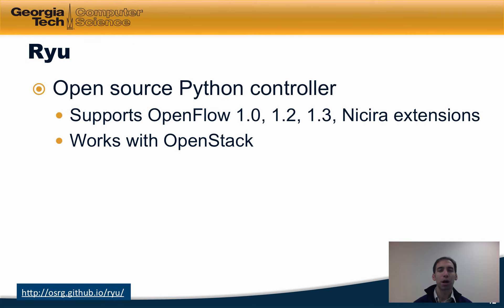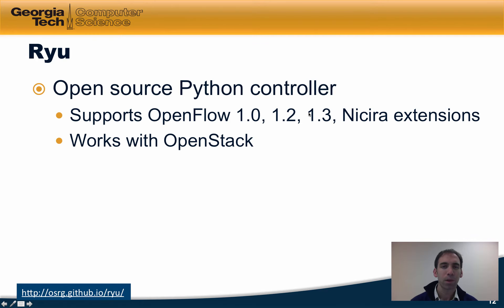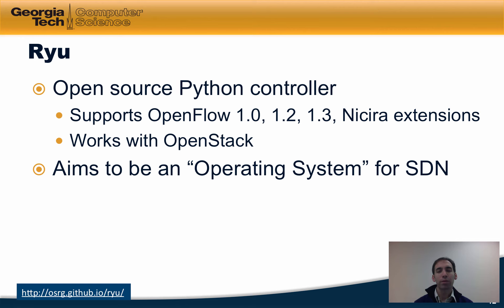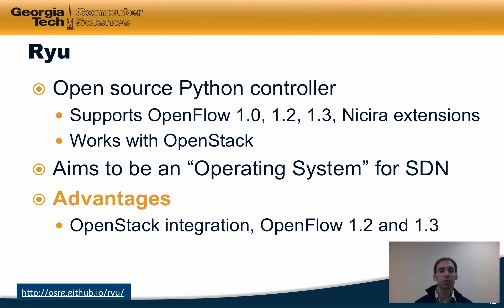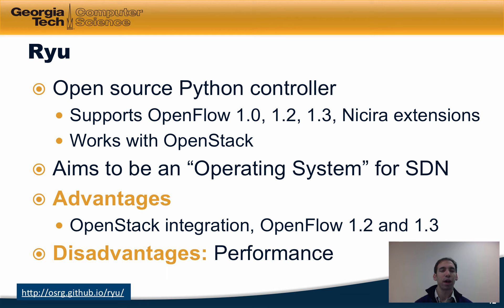Ryu is another open source Python controller. It supports OpenFlow 1.0, 1.2, 1.3, and various Nicira extensions, and it also works with OpenStack — a cloud operating system that controls storage, compute, and networking resources in a data center and allows you to write cloud applications on top of it. Ryu aims to be an operating system for SDN and has advantages including integration with OpenStack and support for OpenFlow 1.2 and 1.3. The disadvantage is that, being implemented in Python, it has relatively slower performance than some other controllers.